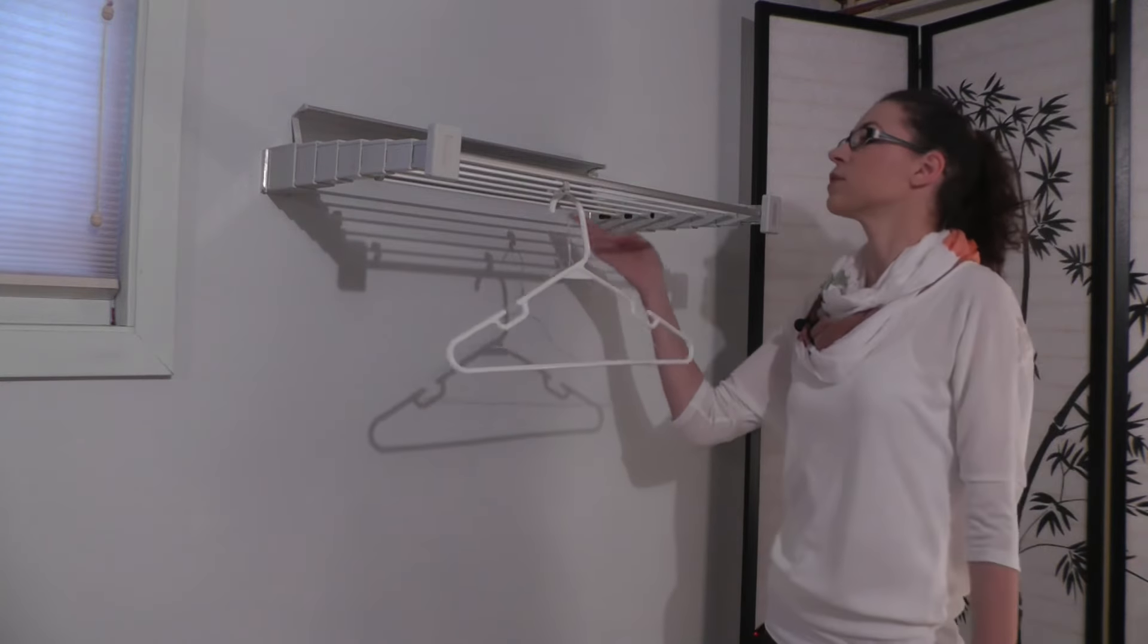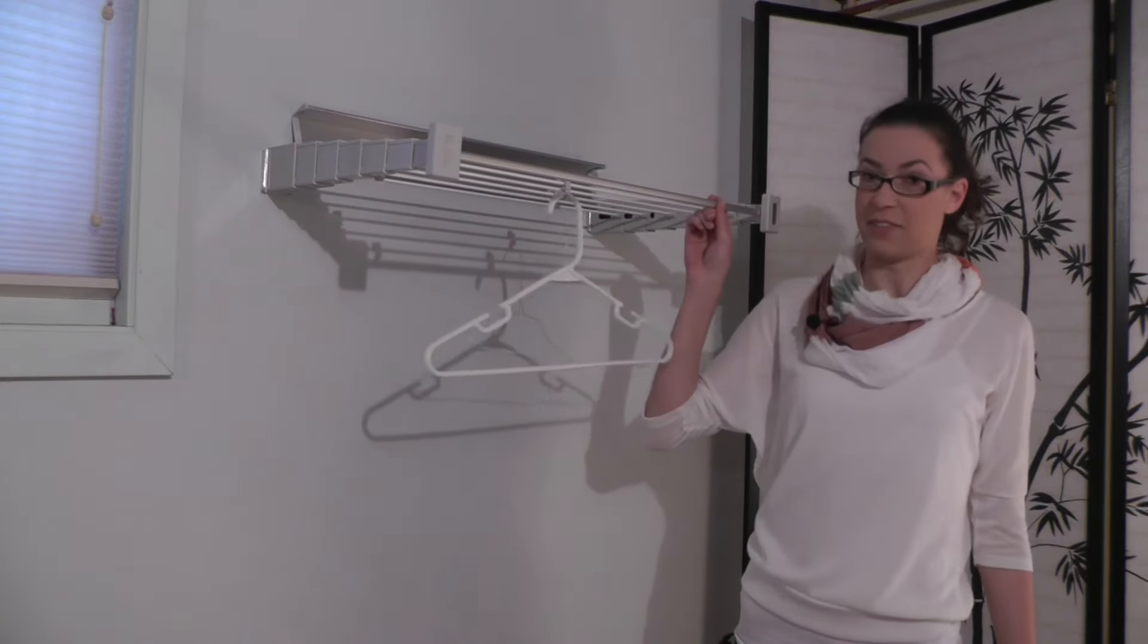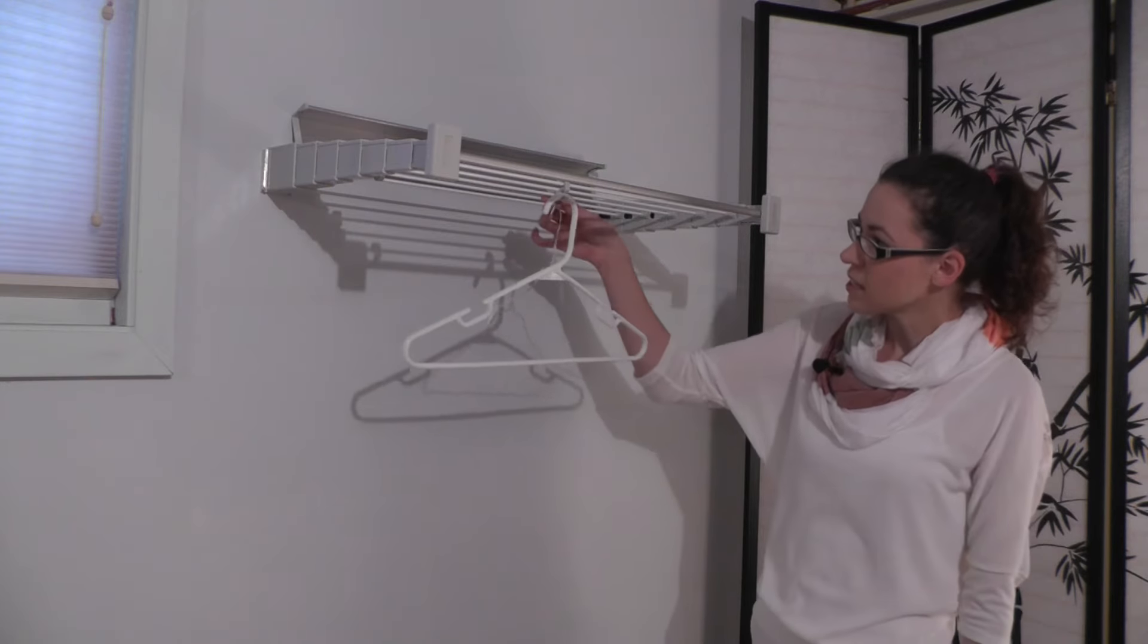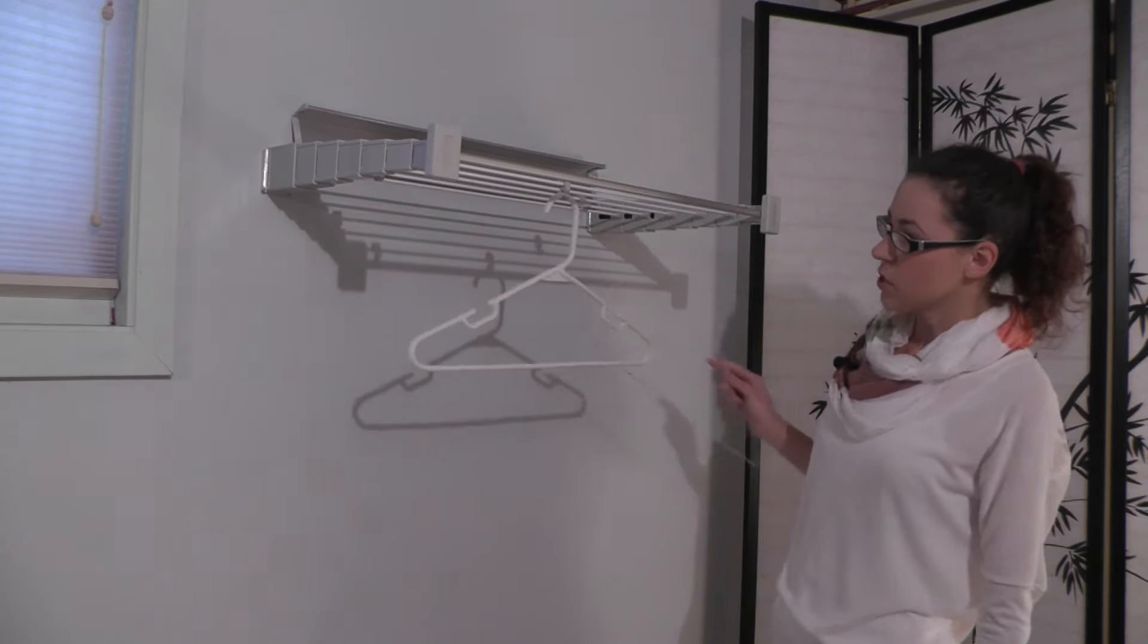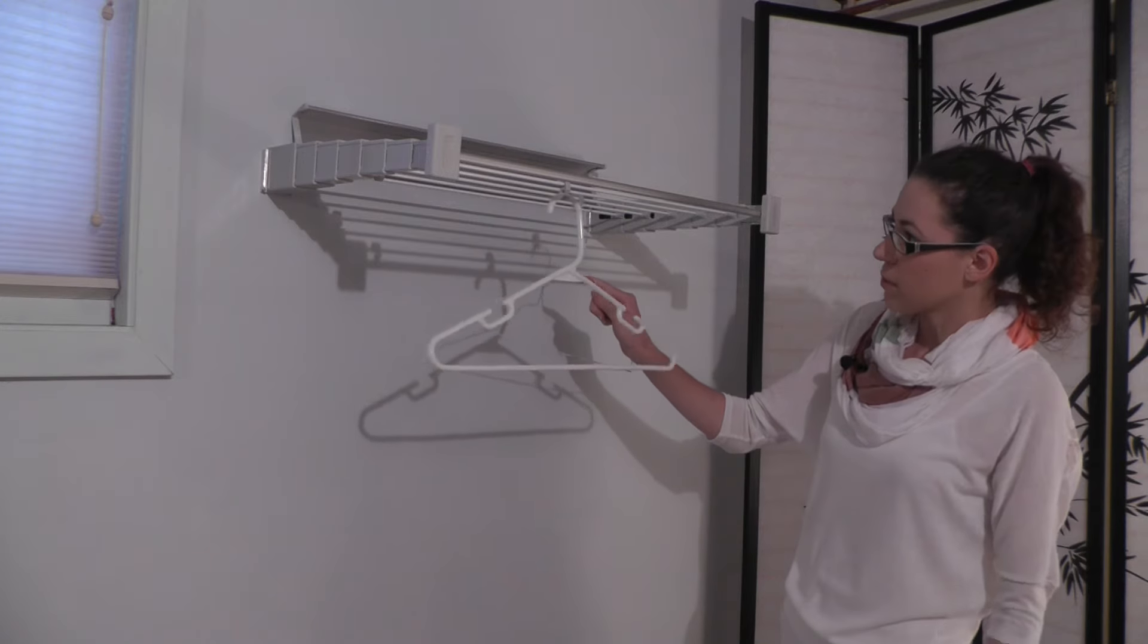It has five different lines, one, two, three, four, five, six different lines, as well as these little things for hangers, so you can hang items or drape them across.